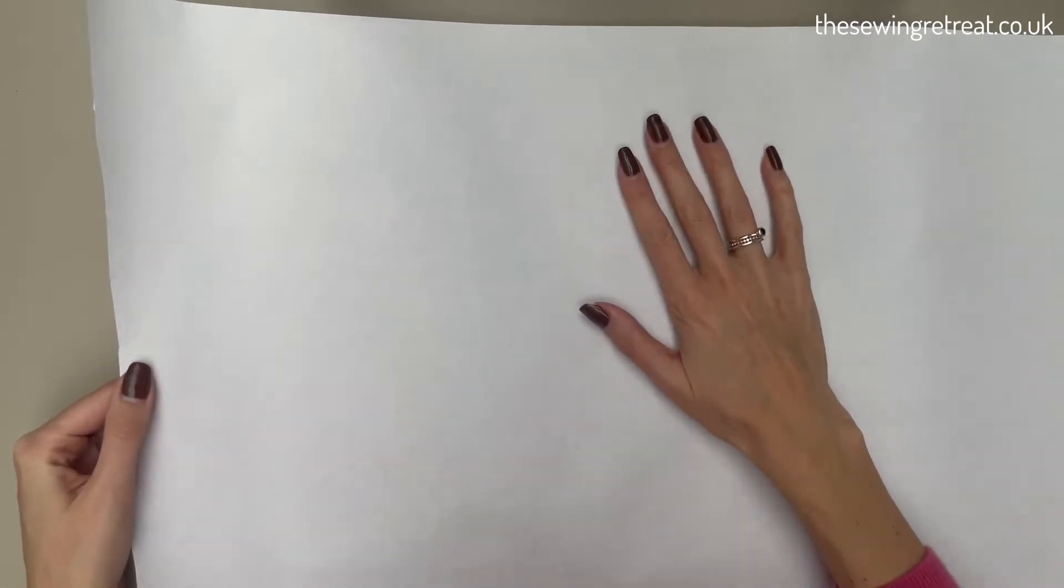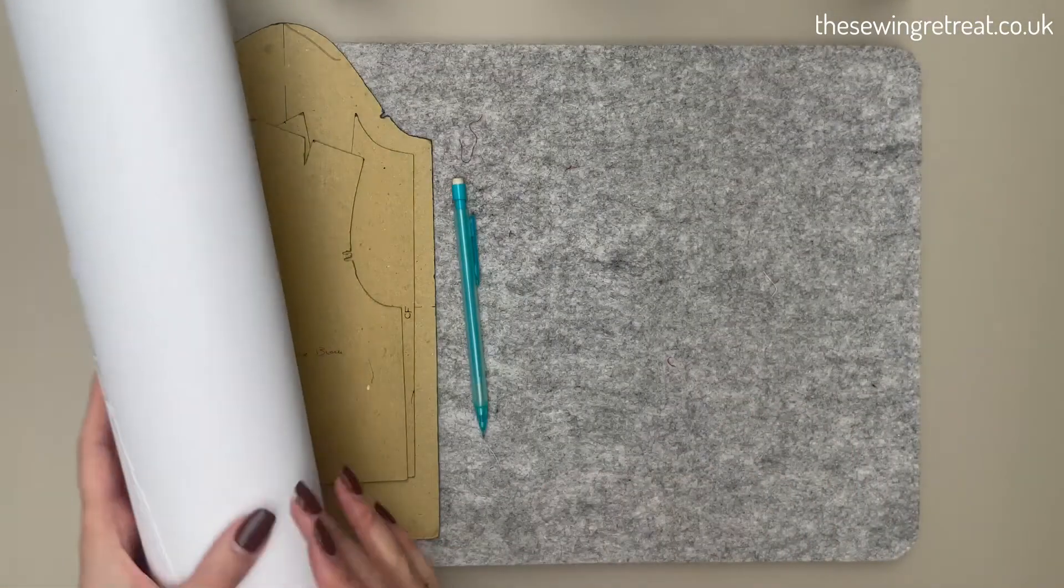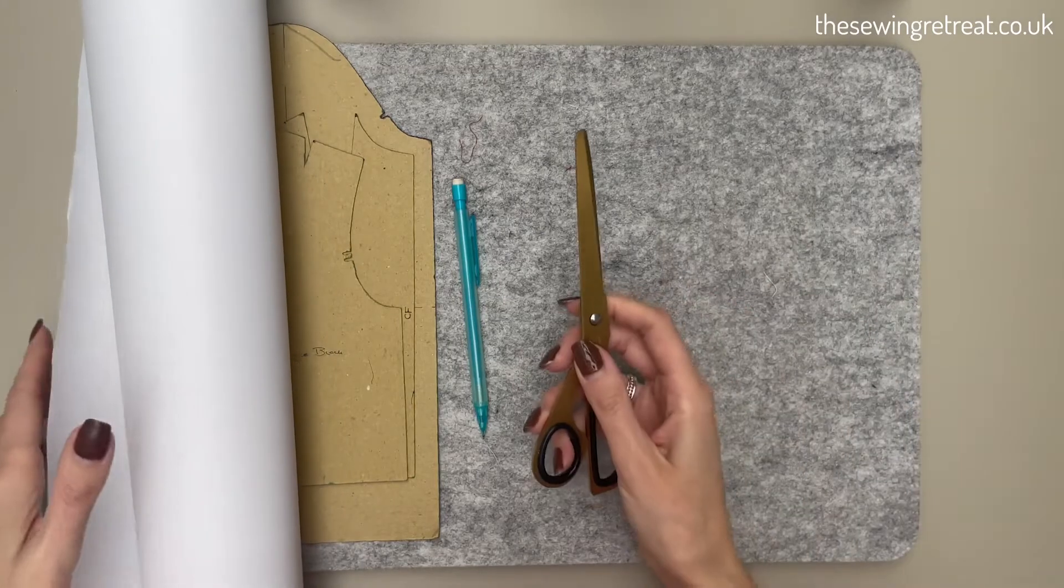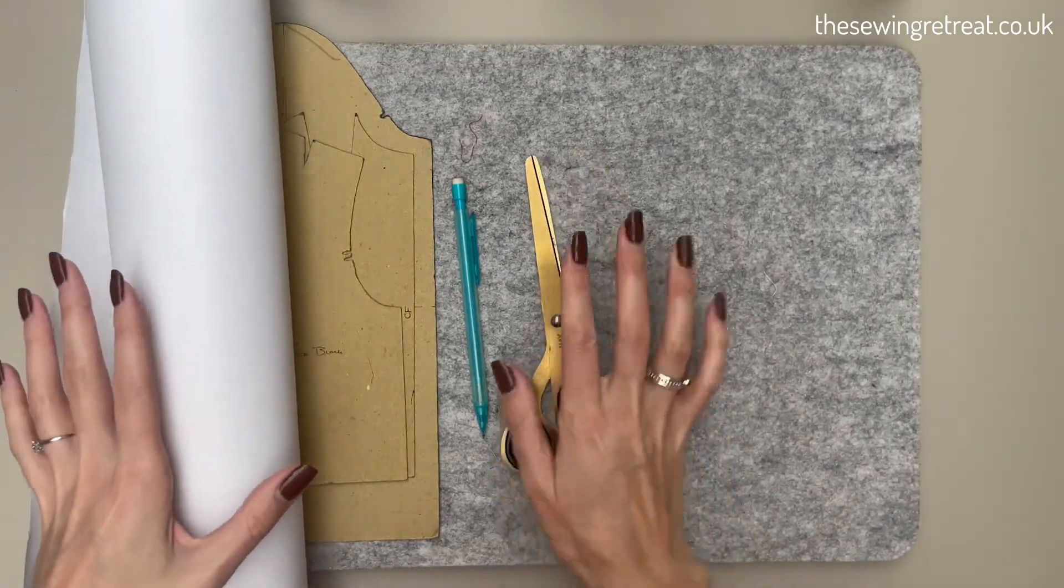We then need scissors to cut out our patterns. We want paper scissors so we don't blunt our fabric scissors. Lastly, we need a pattern cutting ruler.